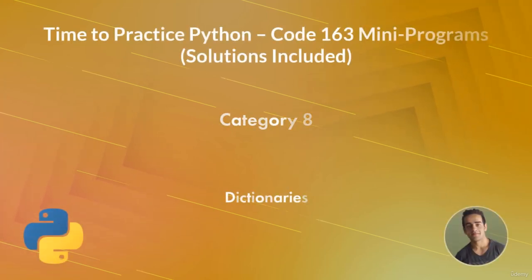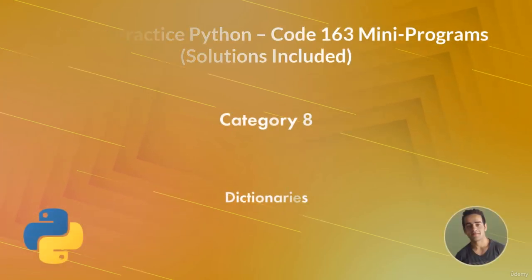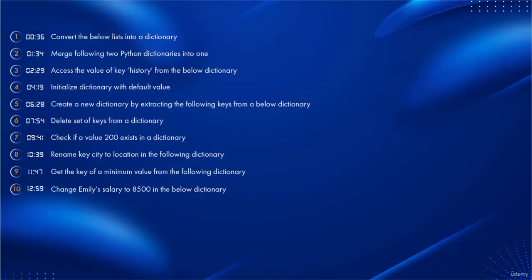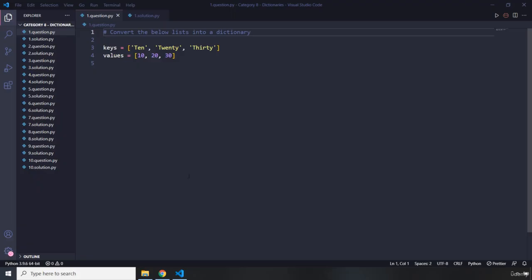Hi and welcome to Category 8 of mini program challenges. In this category we are going to have 10 mini programs or challenges in the category of Python dictionaries. On the screen you can see the timestamp where you can find all the questions and their specific times on this video. Let's dive into the first question.